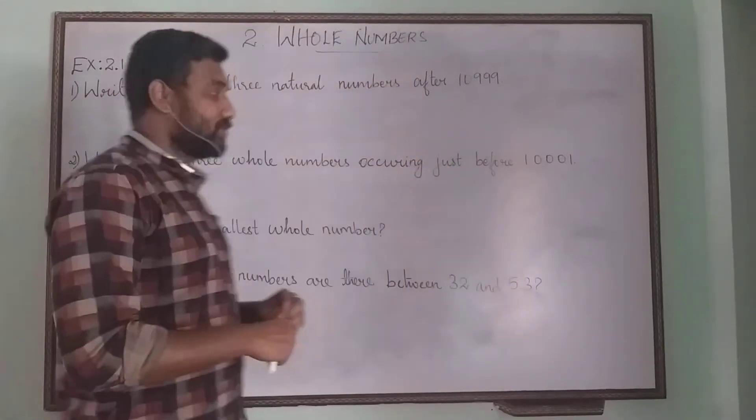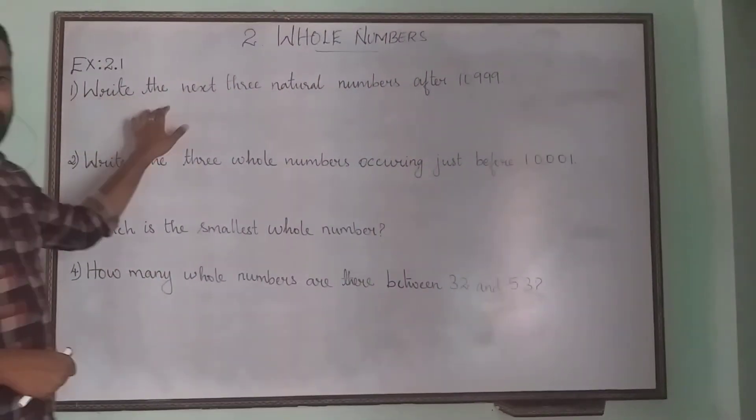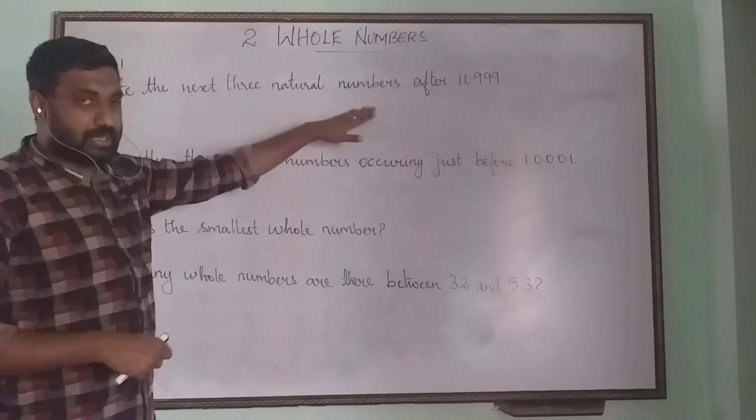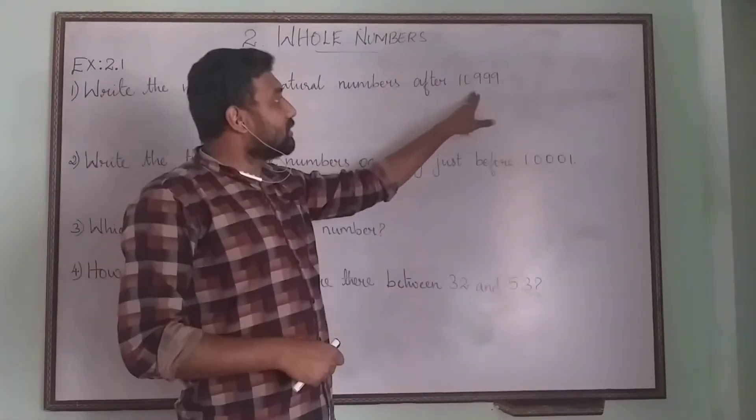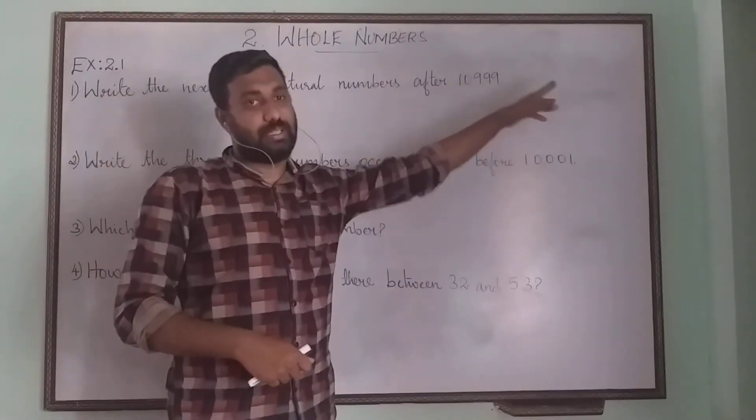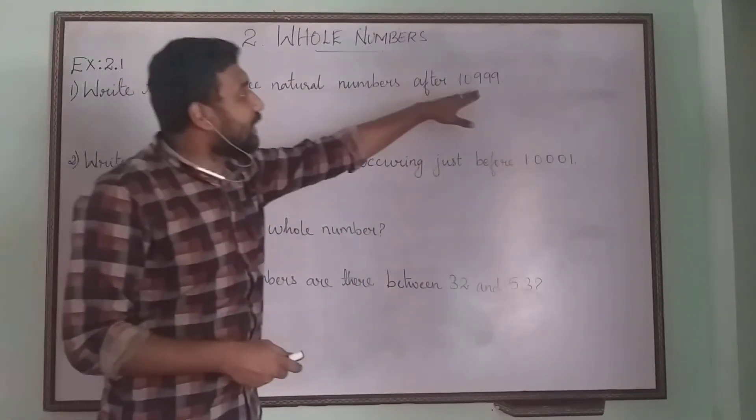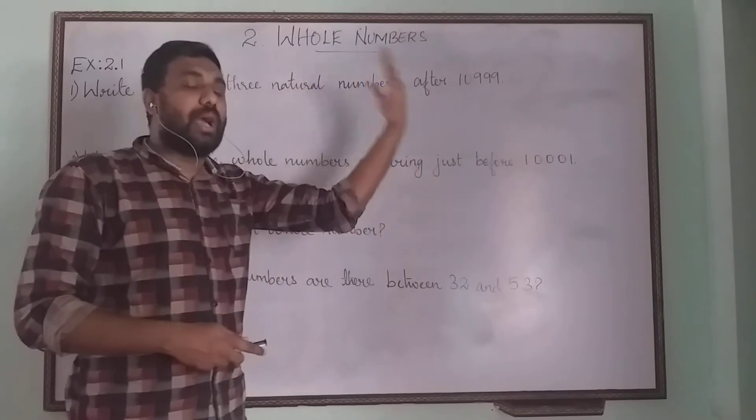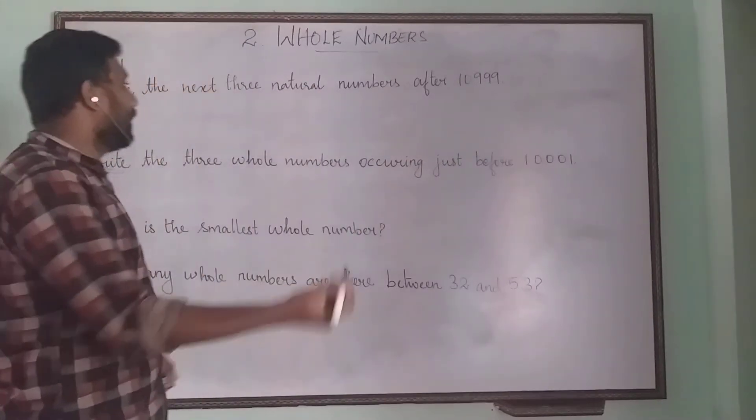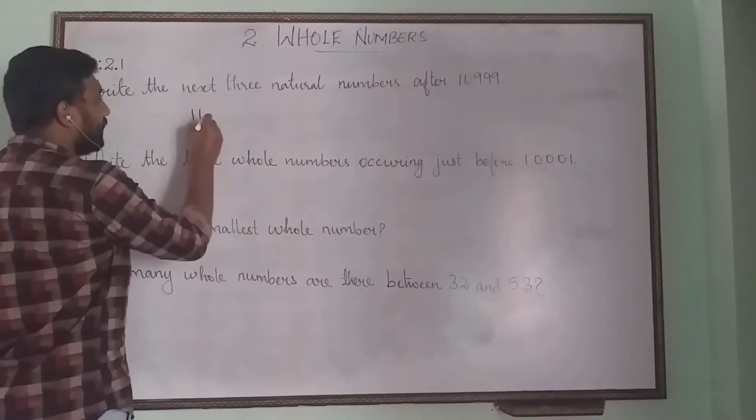So here the first question from exercise 2.1: write the next three natural numbers after 10,999. So we just need to write the next numbers. If it is 10,999, when you add one to it, what will be there? You will get 11,000.